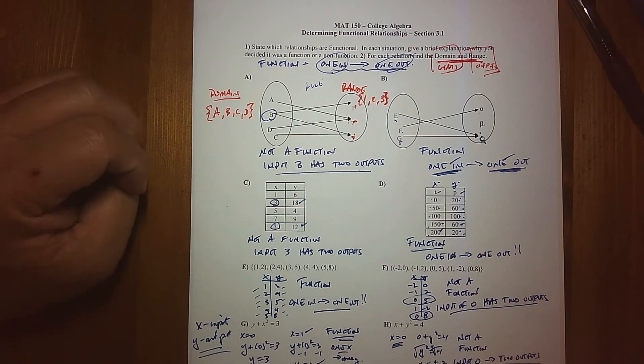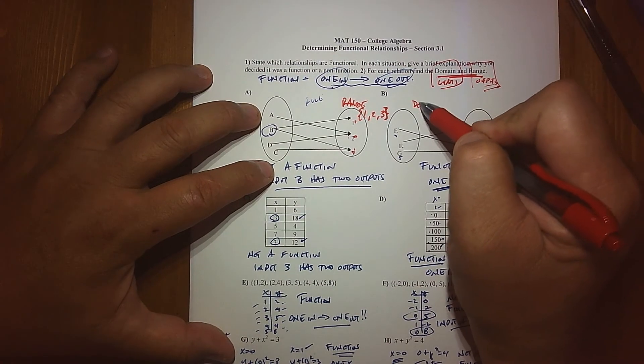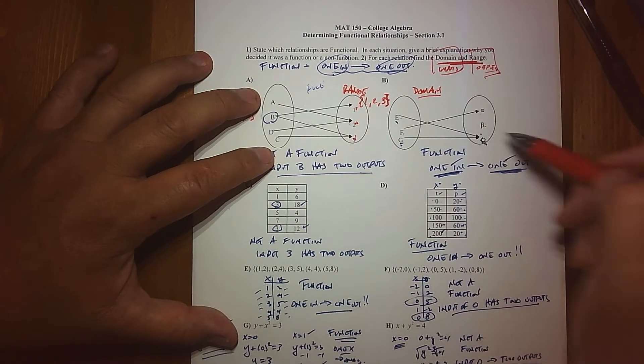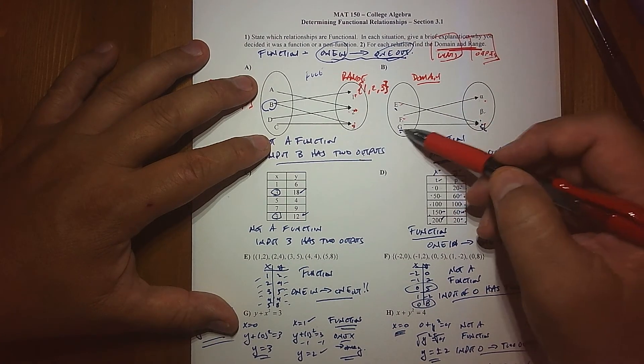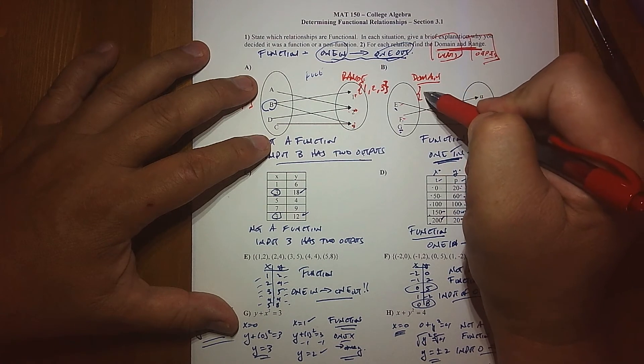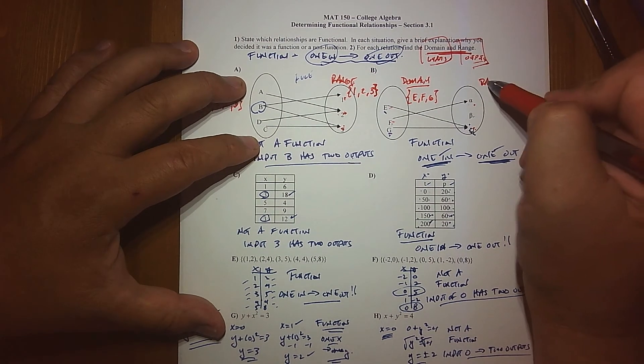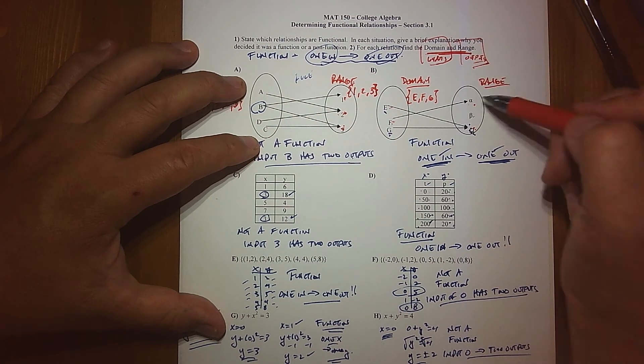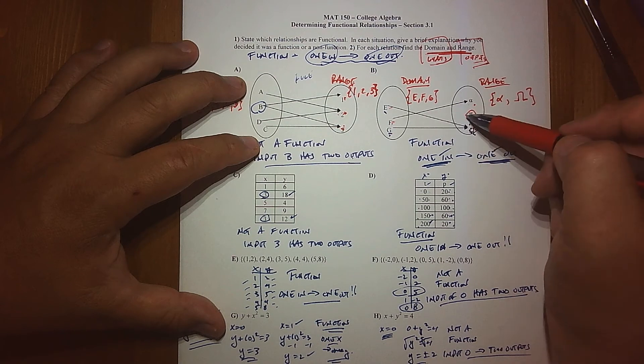So in this case, both our domain and range are discrete. What about the next one? Well, again for domain, what values seem to be making this rule work? E goes somewhere, F goes somewhere, and G goes somewhere. So again, discretely we have E, F, and G. And then in terms of the range, when we look at the outputs, alpha was definitely created so it's in the set, omega was definitely created so it's in the set.